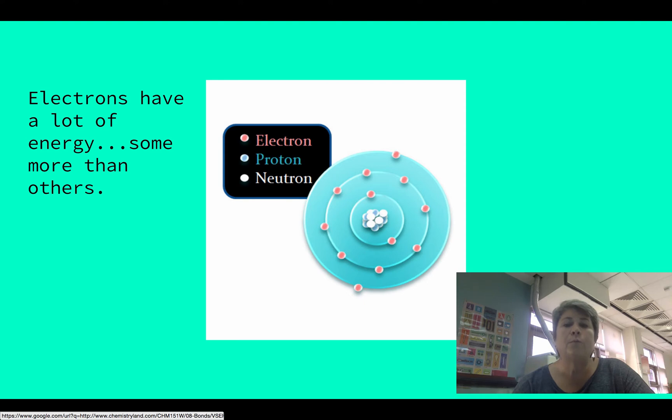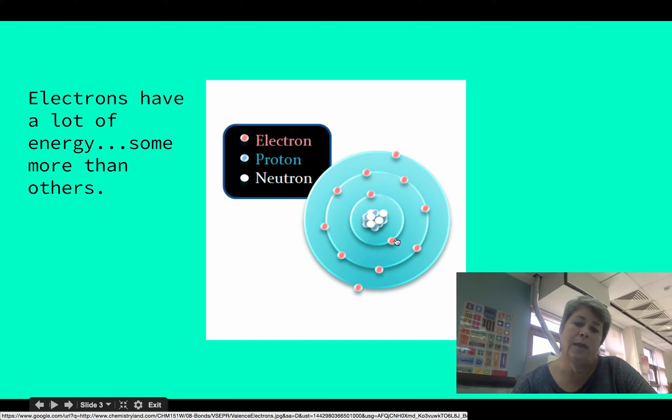They don't have really nice uniform orbits. They do tend to stay in a certain energy level, but they're constantly moving. They've got a lot of energy. Now, some of them have more energy than others. The ones that are the furthest from the nucleus in an atom.